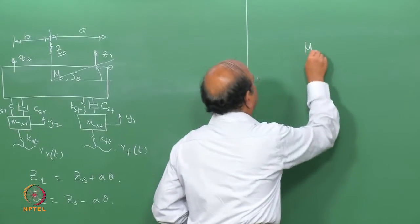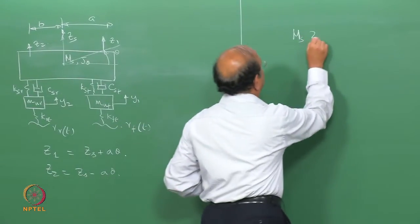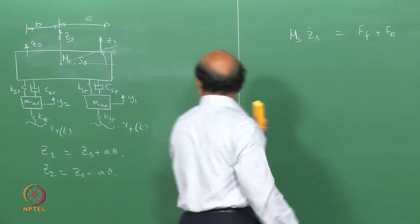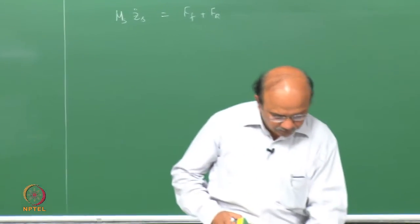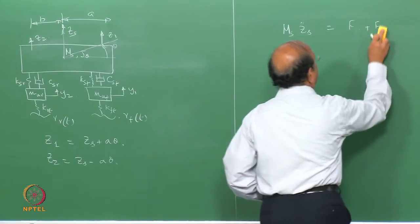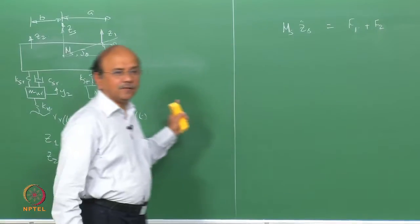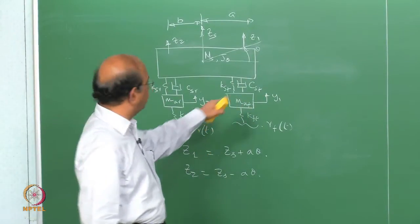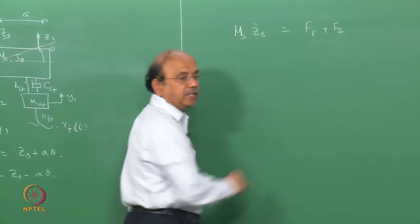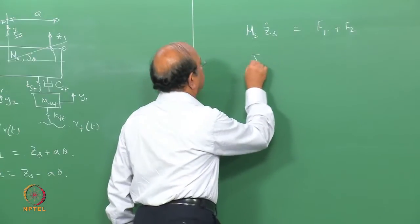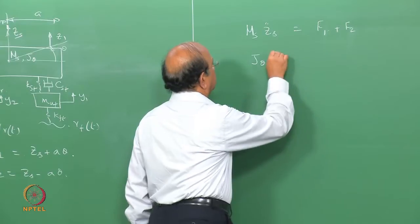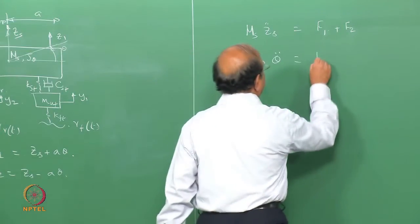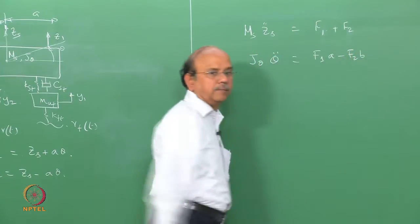I am not going to derive every algebraic step — you have to work out some steps yourself. Now, what are the degrees of freedom? There are 4 degrees of freedom: y1, y2, z1, z2 — or equivalently y1, y2, z_s, and theta. So this is basically a 4-degree-of-freedom model. And F1 and F2 are the forces from the suspension: F1 = −K_FS*(z1 − y1) − C_FS*(z1_dot − y1_dot), and F2 = −K_RS*(z2 − y2) − C_RS*(z2_dot − y2_dot).